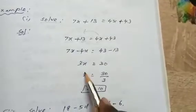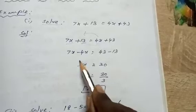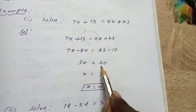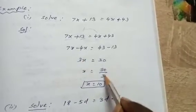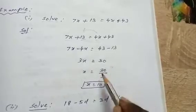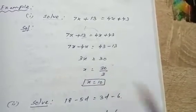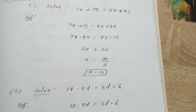We have to find the value of x. Since 3 is multiplied, transposing to the other side means dividing by 3. 30 divided by 3 is 10. So the value of x is equal to 10.